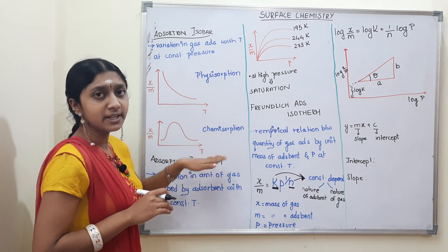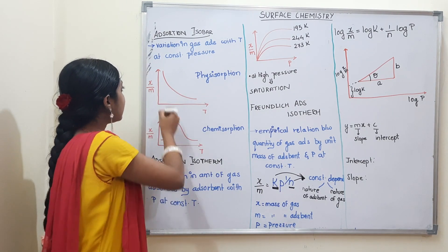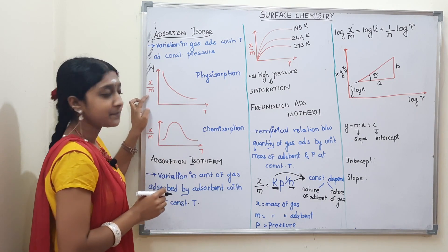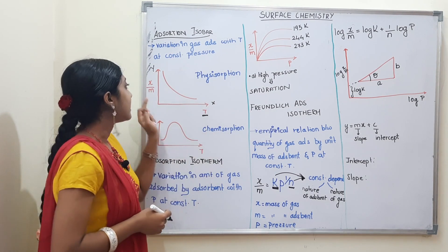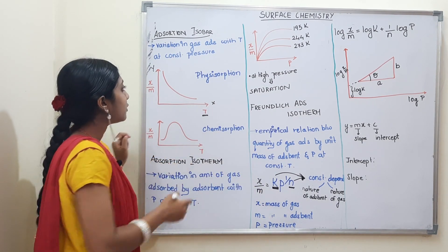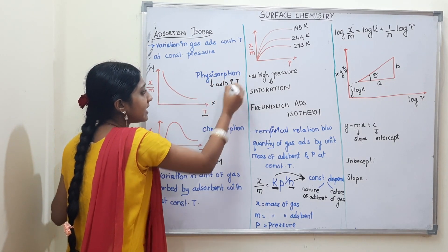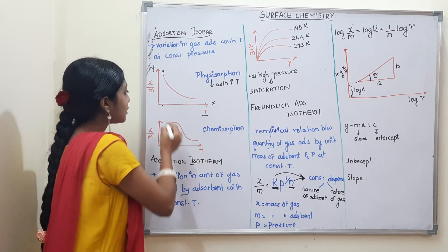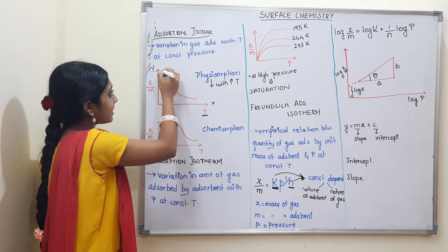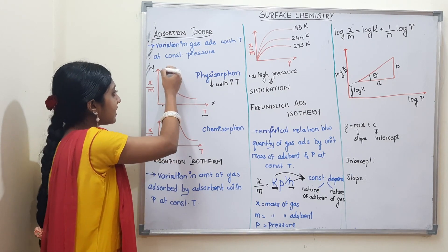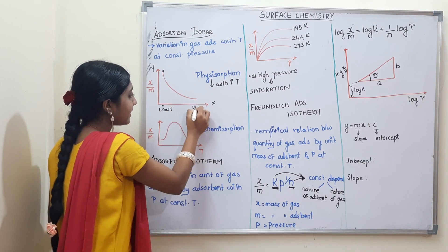There are two graphs for the two types of adsorption: physisorption and chemisorption. In the graph, the y-axis is x/m and the x-axis is T (temperature). For physisorption, adsorption decreases with increase in temperature. Looking at the graph, there is a peak value at low temperature, then a gradual decrease toward high temperature.